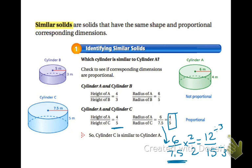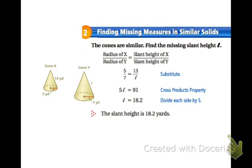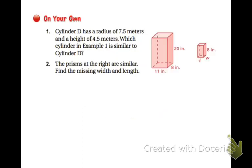We need to work on putting it in the right shape. For finding a missing measure in a similar solid, if you take cone X to cone Y and compare them, you have the radius of X to the radius of Y would be equal to the slant height of X over the slant height of Y. So you have a proportion, 5 over 7 is equal to 13 over L. Cross multiplication will help you get 18.2 yards.